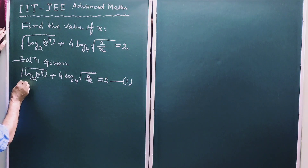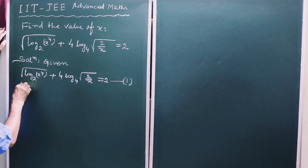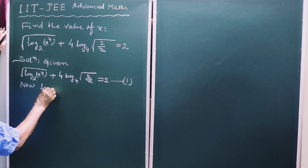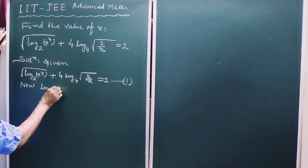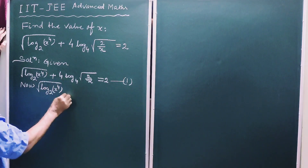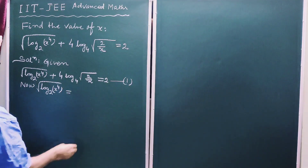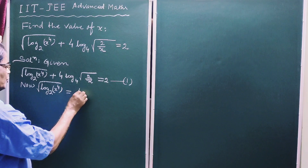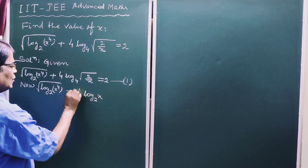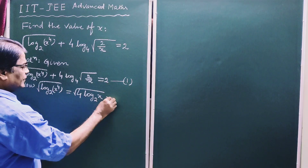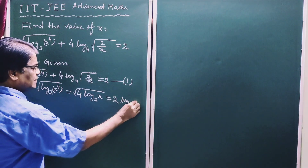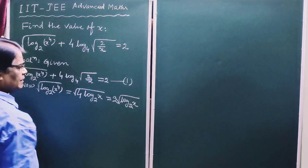In order to solve this equation, start with the first term. Log base 2 of x to the power 4, whole root. This is equal to 4 log base 2 of the square root of x, which is equal to 2 log base 2 of the square root of x.